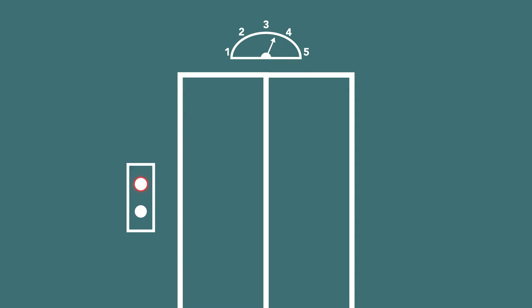Imagine waiting for an elevator. You press the call button and expect it to light up to reflect that the system knows you're waiting and will send an elevator soon. You might even be able to see what floor that elevator is currently at, so you can gauge how long you'll need to wait.